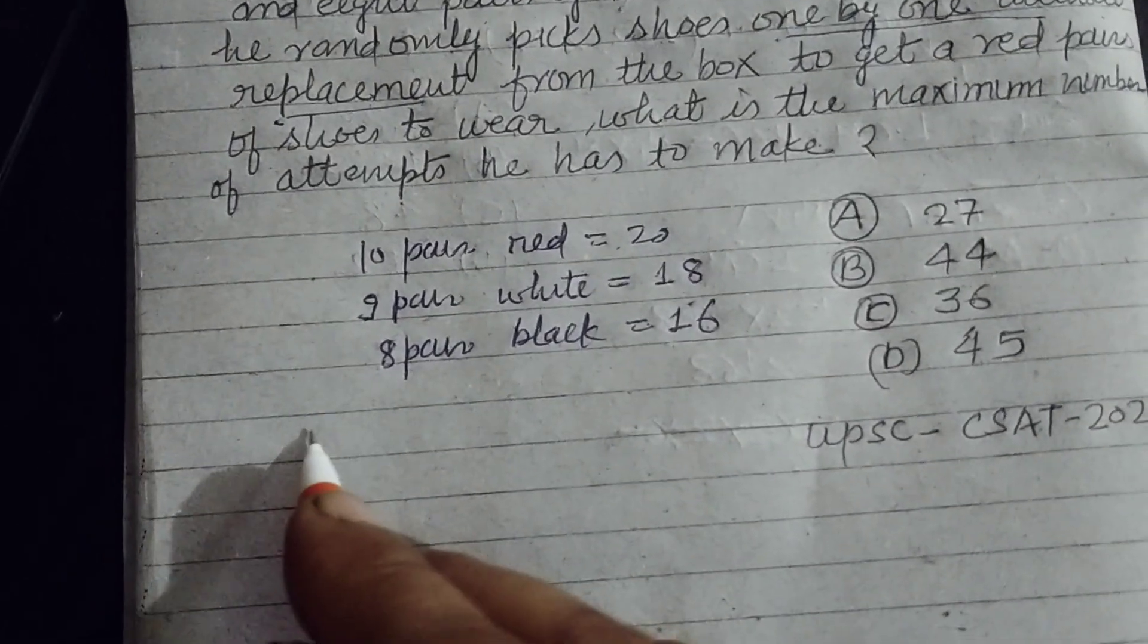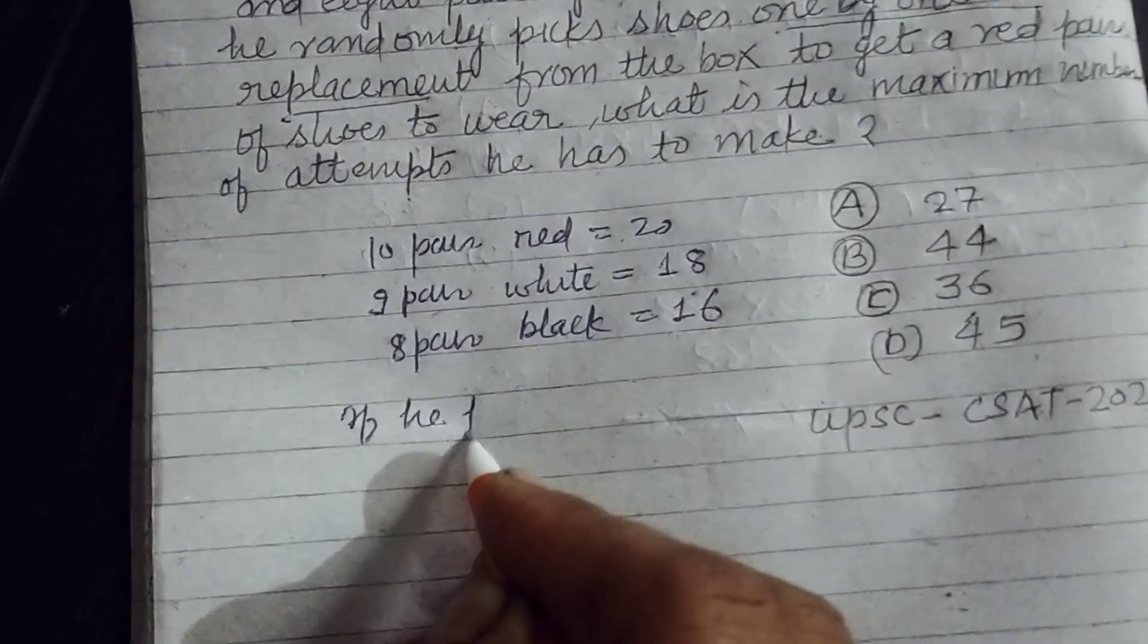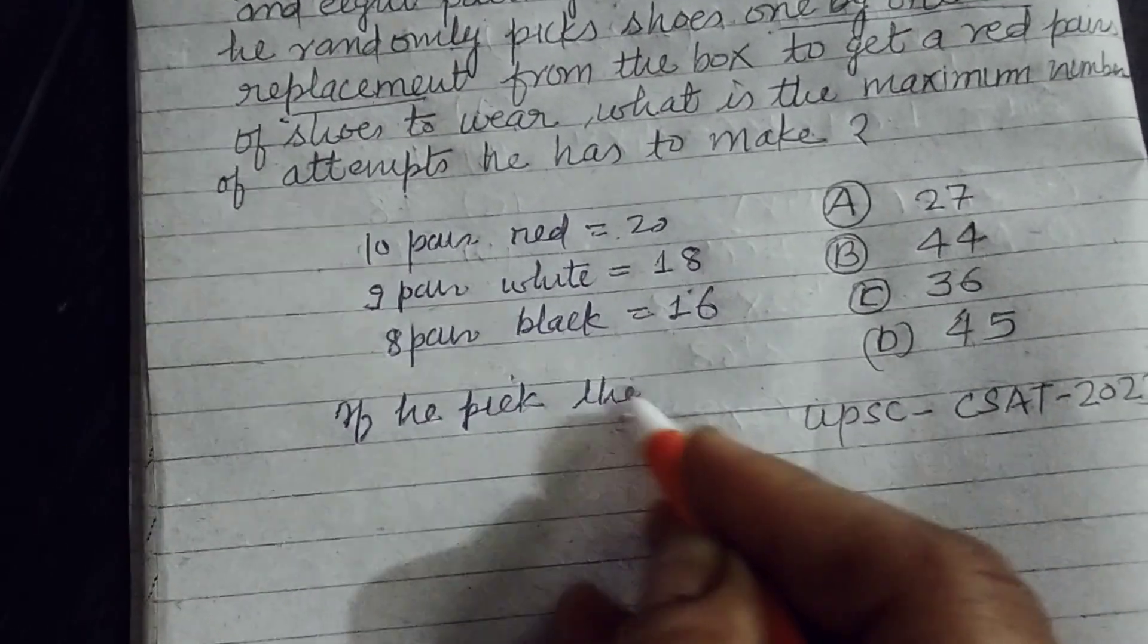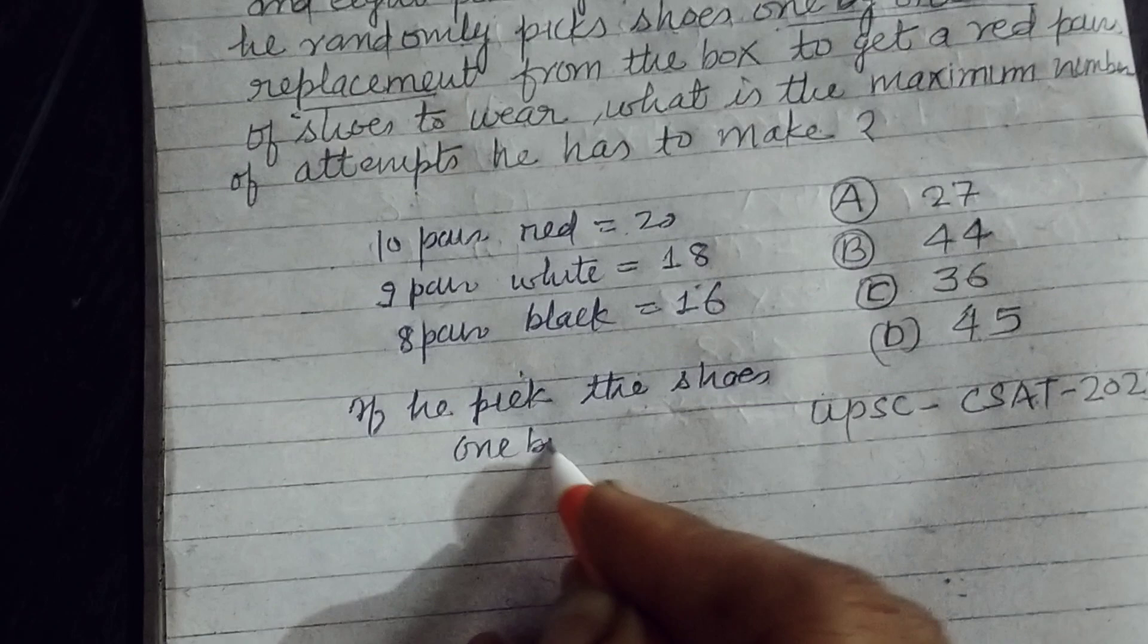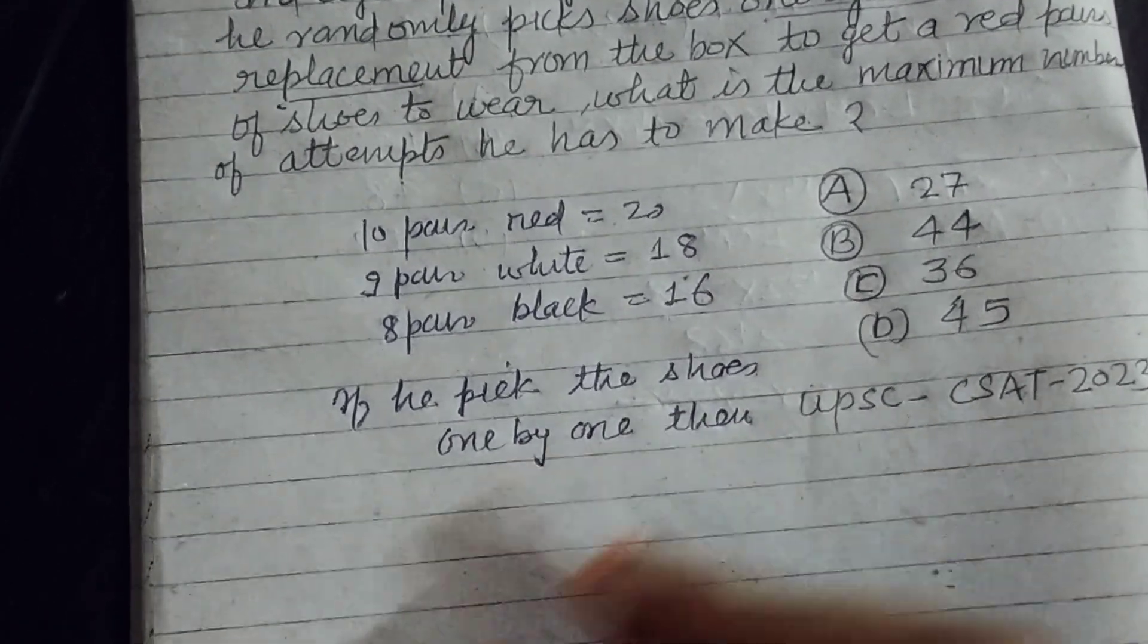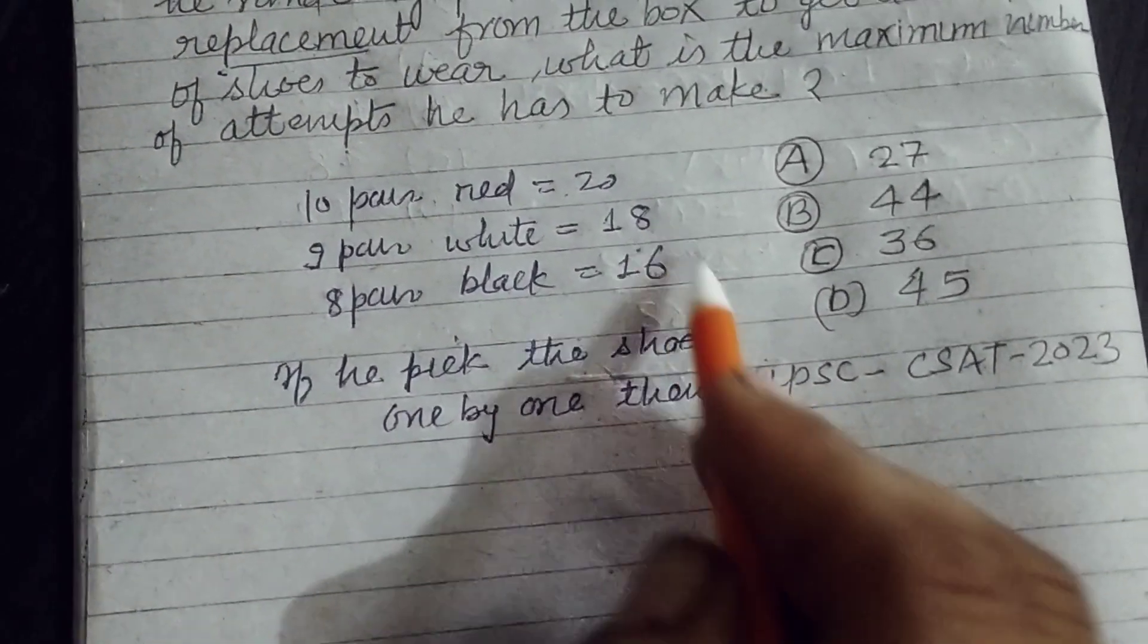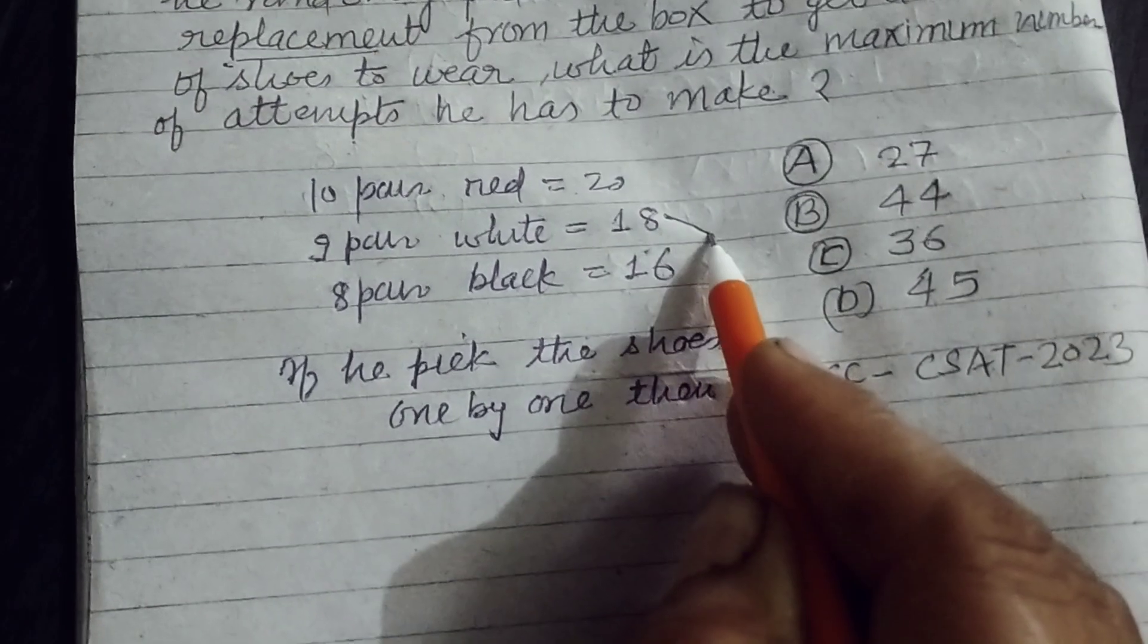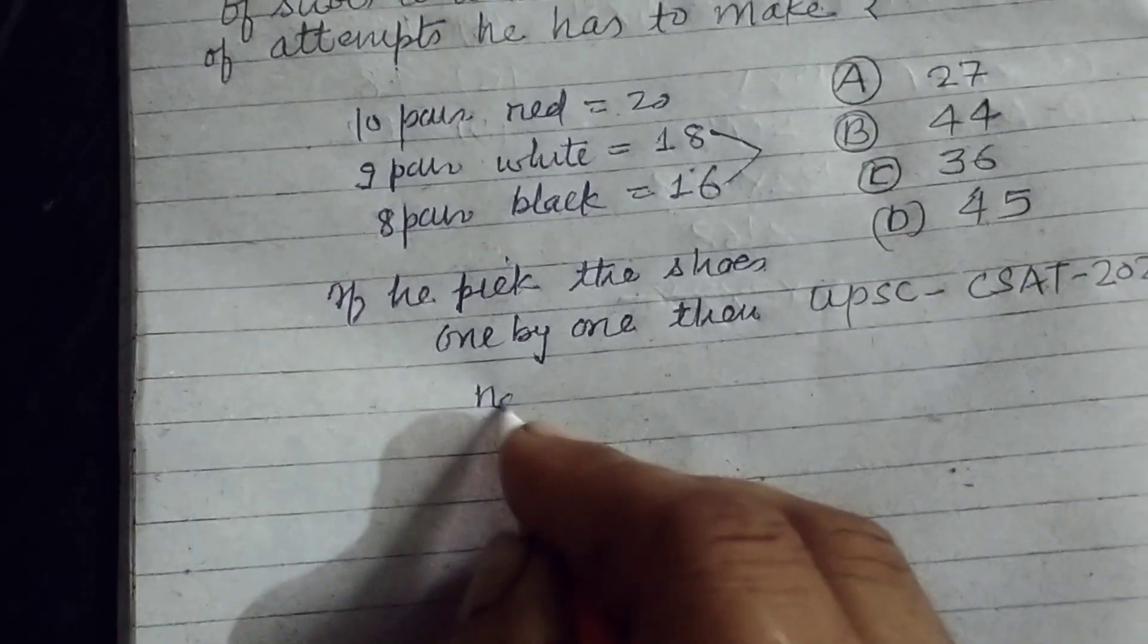So student, if he picks the shoes one by one, then the attempts which are not favorable are 18 plus 16. Not favorable.